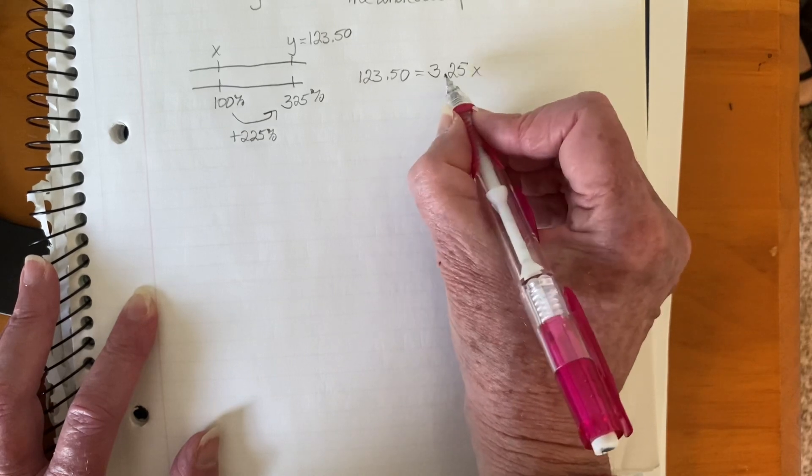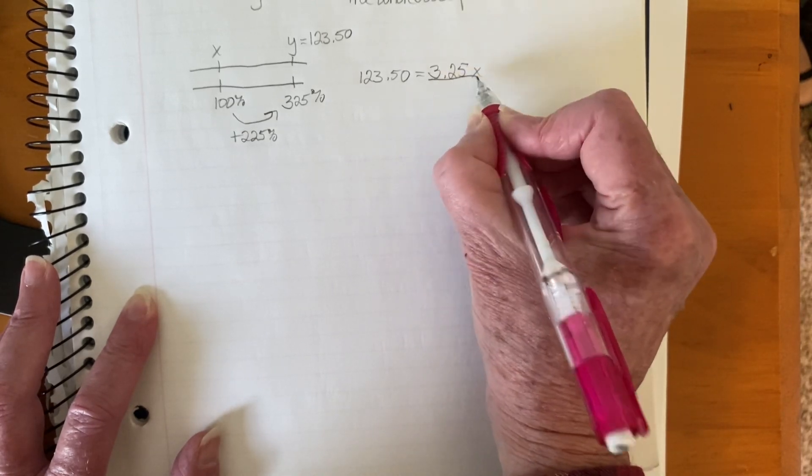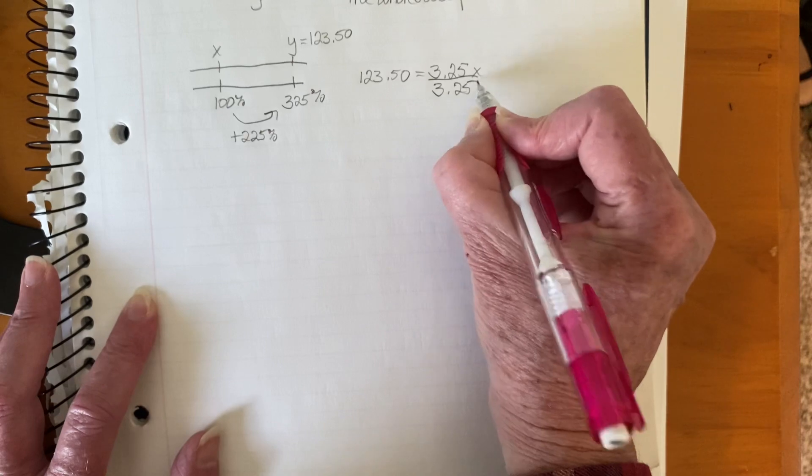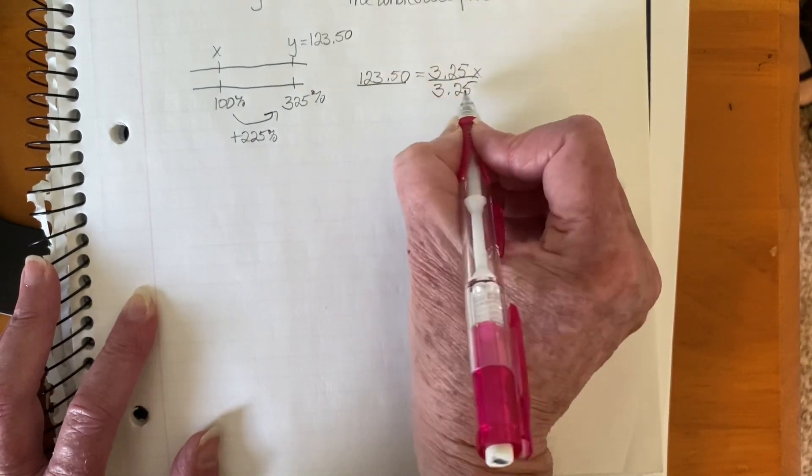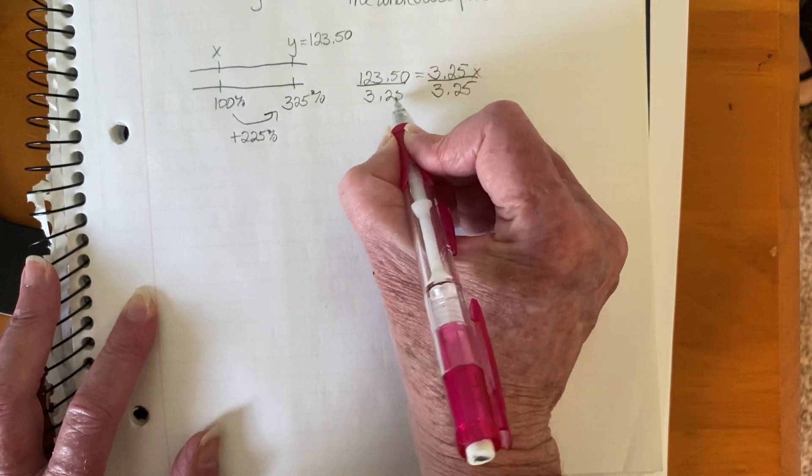So what's attached to the X? It's 3.25 by multiplication. So we are going to divide by 3.25. If we do it on that side, we have to do it on this side to keep it balanced.